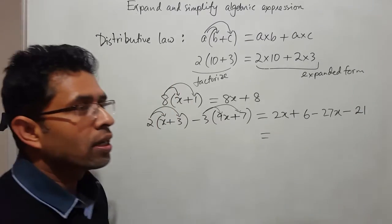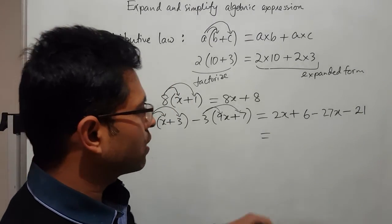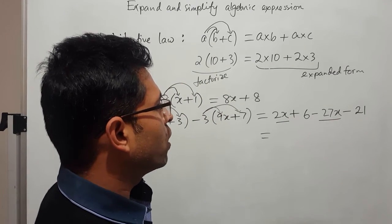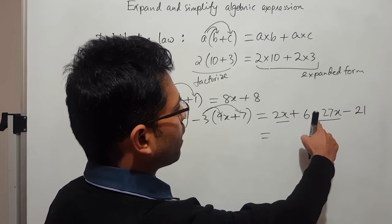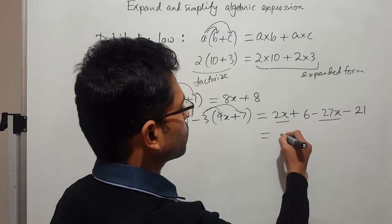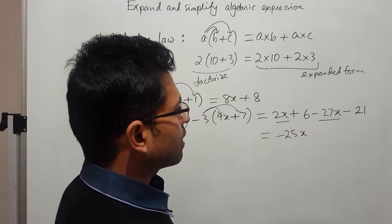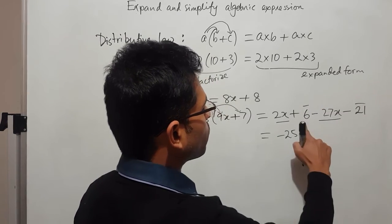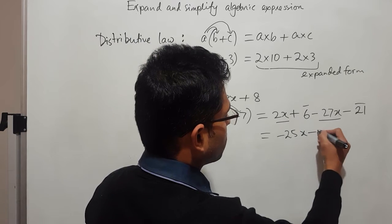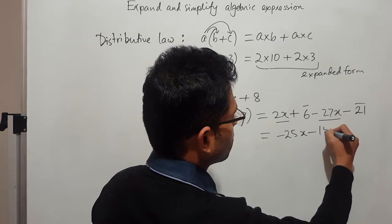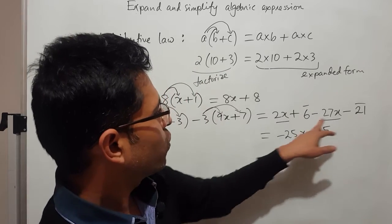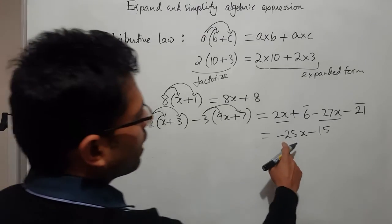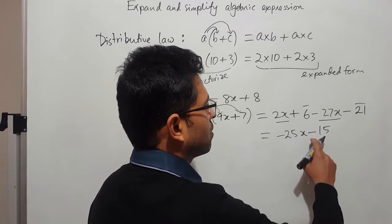Now we just need to collect the similar terms. What I mean: here we have 2x and we have minus 27x. So if you're collecting together it would be minus 27 plus 2x which is minus 25x. And then if you're adding this one and this one which is minus 21 plus 6 leaves minus 15. So 21 minus 6 which is 15, and it's negative because negative is dominating here. So minus 25x minus 15.